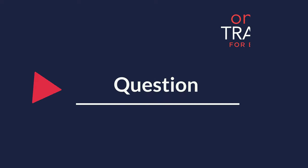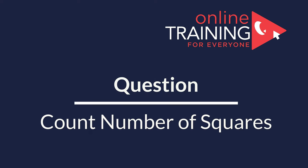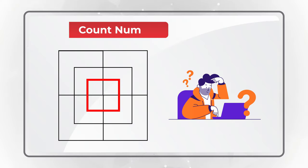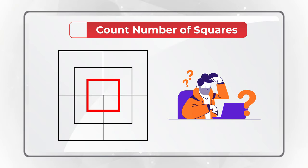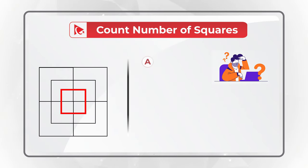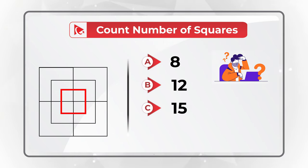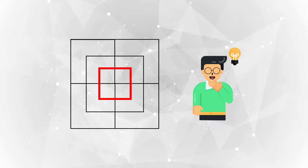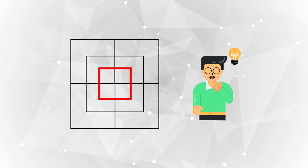Here is one of my favorite questions where you need to count the number of squares presented in the shape. You have four different choices: Choice A, 8; Choice B, 12; Choice C, 15 squares; and Choice D, 18 squares. Take a close look at the picture to see if you can come up with the right choice. Nobody is going to give you a tip during the real test, but I am going to give you a hint — look at the squares inside the squares.